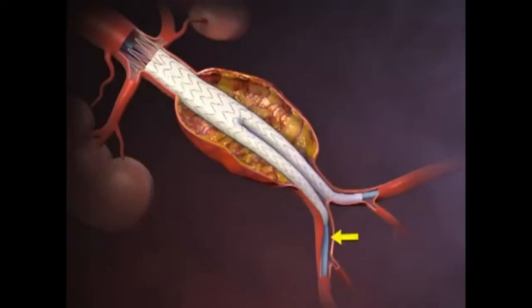The ipsilateral limb of the stent graft is deployed in similar fashion. A balloon is then introduced and used to expand all graft-to-vessel and graft-to-graft junctions in the proximal to distal direction to ensure a tight seal. Finally, the sheaths and guide wires are removed and the femoral artery is repaired.